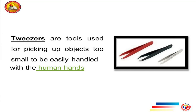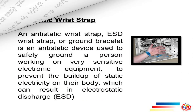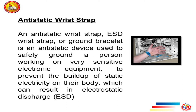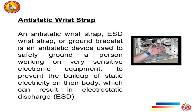Tweezers are tools used for picking up objects too small to be easily handled with human hands. Antistatic wrist strap: An antistatic wrist strap, ESD wrist strap, or ground bracelet is an antistatic device used to safely ground a person working on very sensitive electronic equipment, to prevent the buildup of static electricity on their body, which can result in electrostatic discharge.